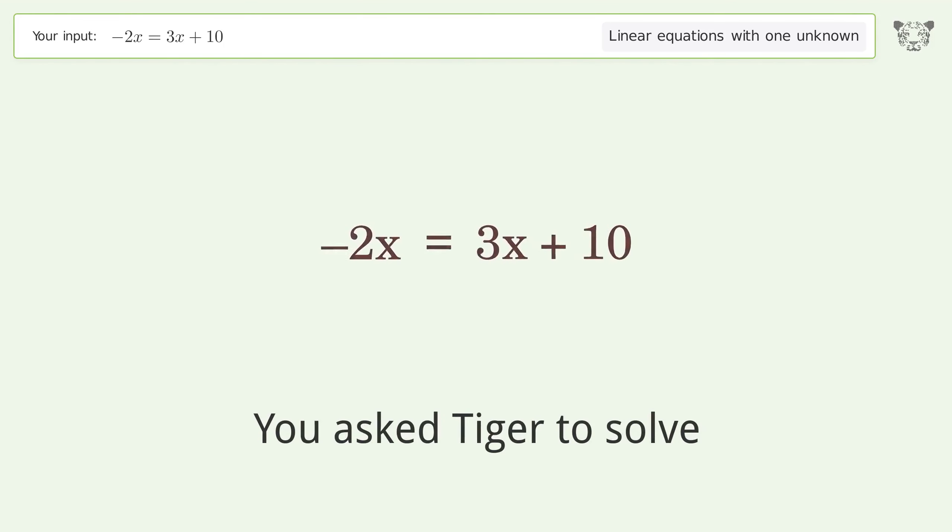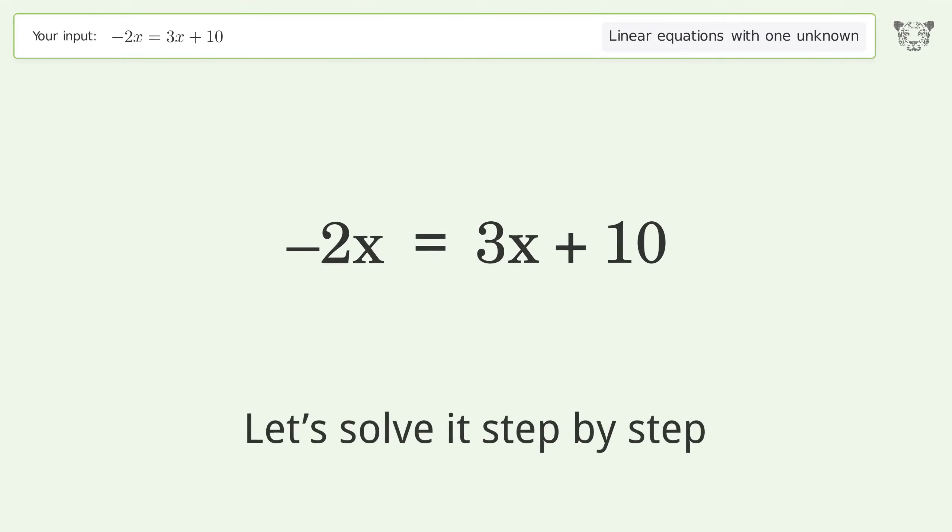You asked Tiger to solve. This deals with linear equations with one unknown. The final result is x equals negative 2. Let's solve it step by step.